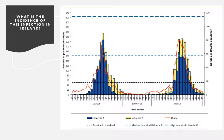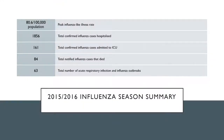The incidence rates of influenza virus in Ireland according to the HSPC are shown in this graph. Numbers rise above the medium intensity threshold in the first weeks of 2015 and 2016, with little to no cases notified in the summer months and most cases occurring in winter. The statistics for winter 2015 and 2016 show almost 2000 cases, with over 150 admitted to ICU and 84 causing fatalities.